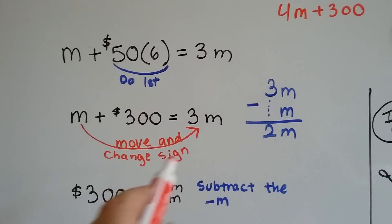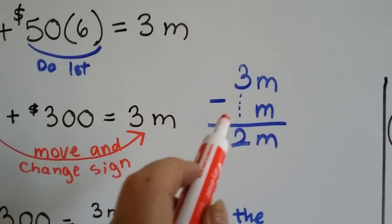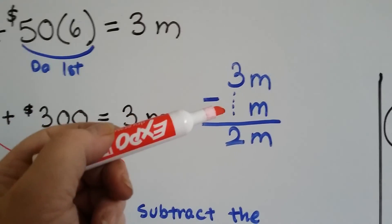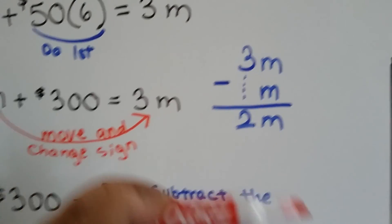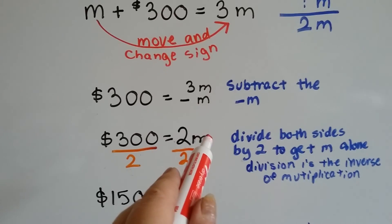So let's move this guy over here. But he's a positive, so now he's going to become a negative. And remember, there's that invisible one in front of him. So if we have 3M and we take away an M, we're going to have 2M. There we go.